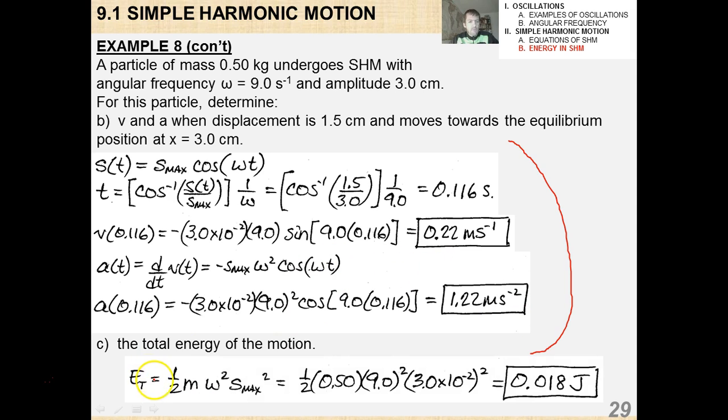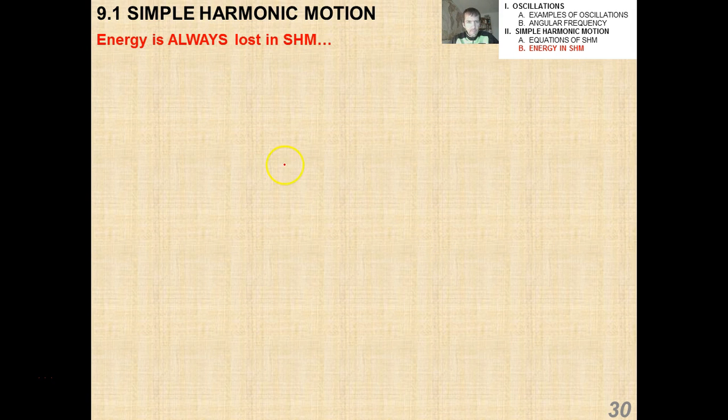The total energy, there's a couple of different ways to do this. I think the easiest way is to just do the 1.5 m omega squared S max squared, and I got that it's 0.018 joules, which is not a lot of energy. But this is a fairly small object that has an angular frequency that's actually not that high. So it's 18 millijoules.